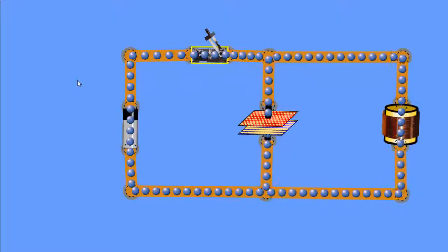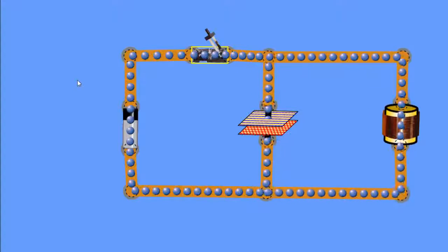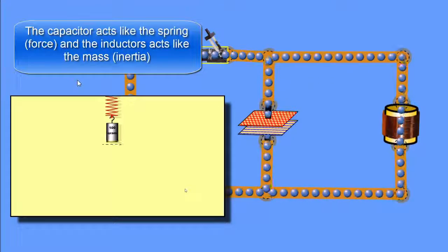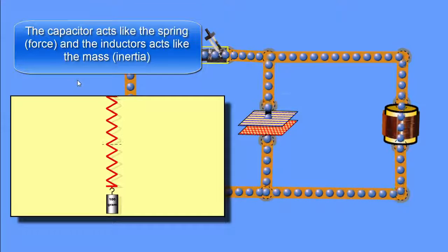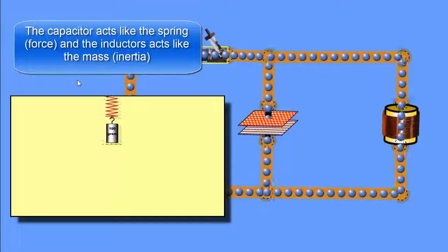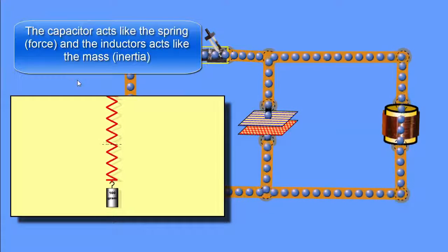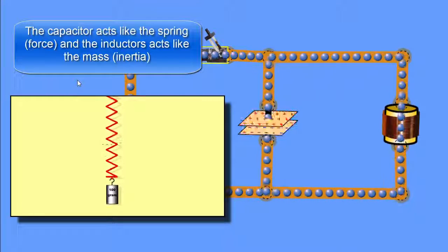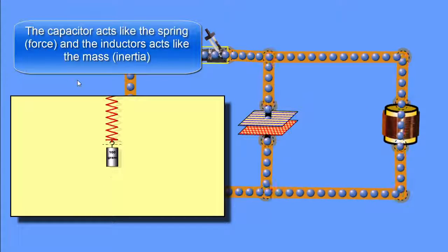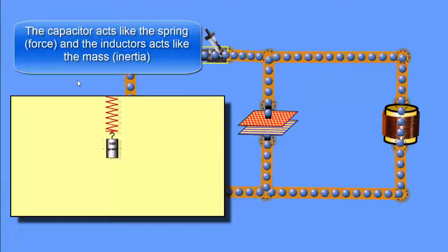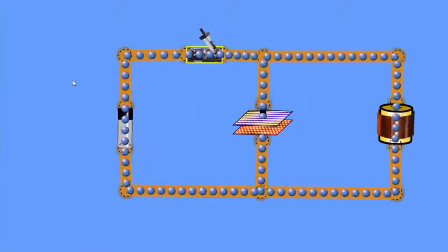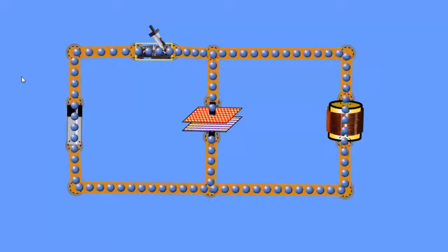Another system that this is very similar to is a spring-mass system. A spring-mass system allows the weight of a mass to be converted into kinetic energy as it moves. Eventually that kinetic energy, when the mass stops moving, is converted into potential energy stored in the spring as tension. So the spring goes back and forth between tension and compression, and in the process the mass moves up and down, exchanging energy with the spring — putting the spring in compression in one situation and tension in the other.